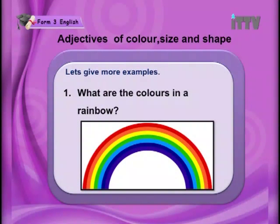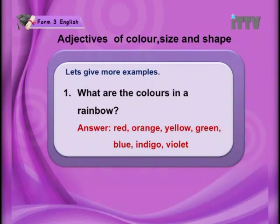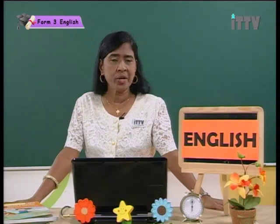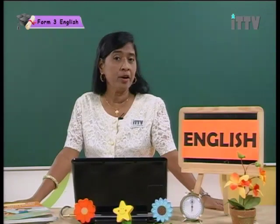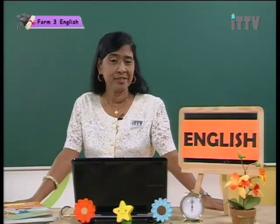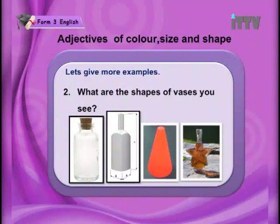Next we have more examples on colors. What are the colors in a rainbow? Look at the rainbow — I'm sure you have seen a rainbow. The answer: red, orange, yellow, green, blue, indigo and violet. I'm sure you've learned about the colors of a rainbow in primary school. Now we're going to continue further on adjectives based on shapes.